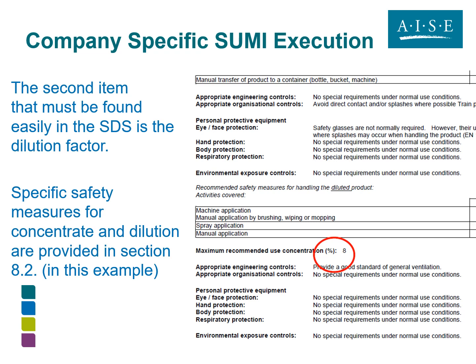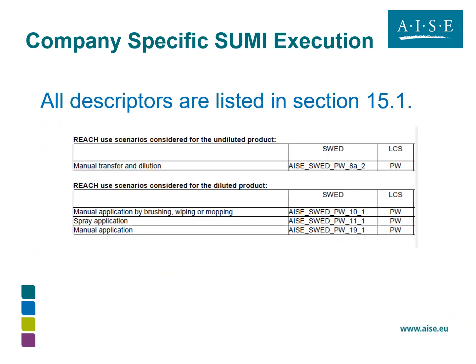Other items that the cleaning company would need to find easily include the maximum recommended use concentration — the dilution factor — which you can see highlighted here. Some specific safety measures for concentrate and dilution would be provided in section 8.2, and a summary of descriptors would be provided in section 15.1. This is an example of how the information could be conveyed in a tailored situation by a formulator.